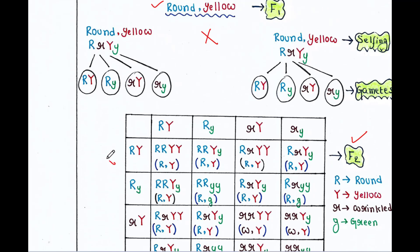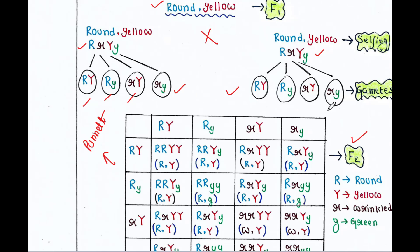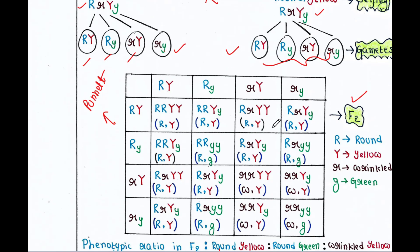This is called the Punnett square. Four gametes are produced from each parent: the 1st gamete contains capital R capital Y, the 2nd contains capital R small y, the 3rd contains small r capital Y, and the 4th contains small r small y. The same four gametes are found in the other parent as well. We made this cross and found these results — you can write the 4 gametes on each side and then construct the Punnett square.